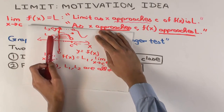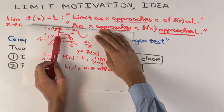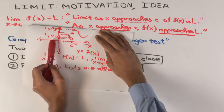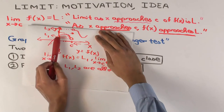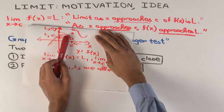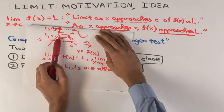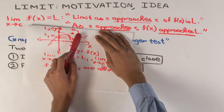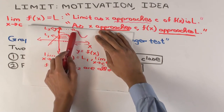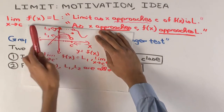So the graphical interpretation is: for the left-hand limit you basically follow the graph on the immediate left and see where it's headed, looking at the y-coordinate of that point. For the right-hand limit you follow the graph on the right and see where that's headed, and look at the y-coordinate of that.